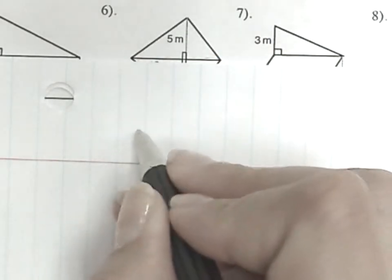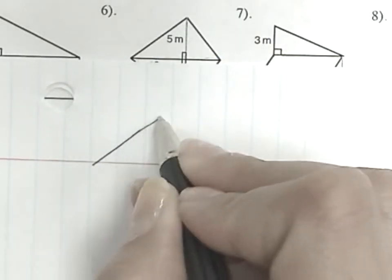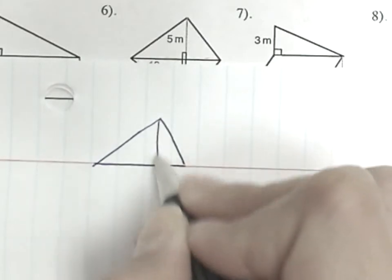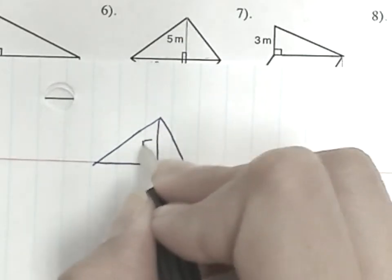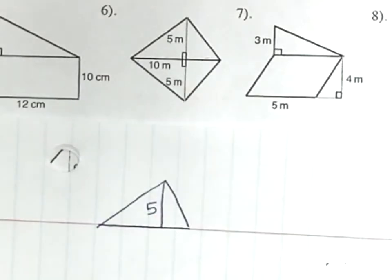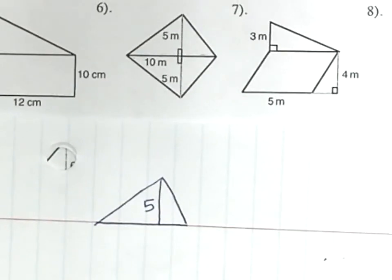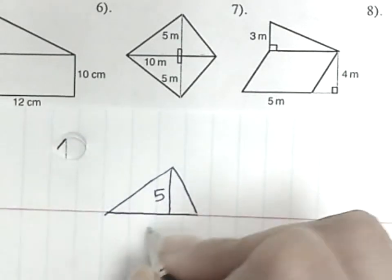Okay, so the first triangle looks like this and it tells me that this line is, that's my height and it's five meters. Do we know anything about the base of that triangle? Yes, what is it? Ten.